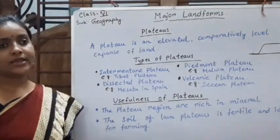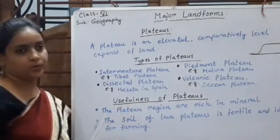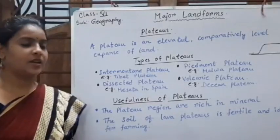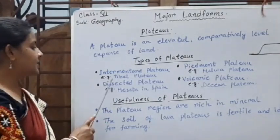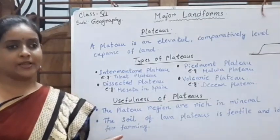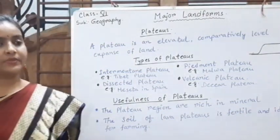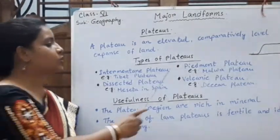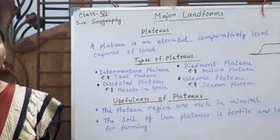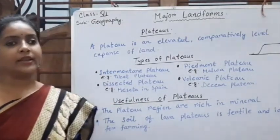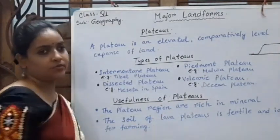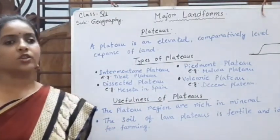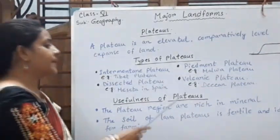Types of plateaus: plateaus can be of four types. Number one is intermountain plateau — this type lies between mountain ranges. Example is the Tibet Plateau. Number two is dissected plateau — when a continuous plateau is cut through by a river or stream, it is called a dissected plateau. Example is Meseta in Spain. Next is Piedmont plateau, also called border plateau — they lie at the border of any ocean or plain. Example is Malwa Plateau in India. Next is volcanic plateau — formed because of volcanic activity. Example is the Deccan Plateau.